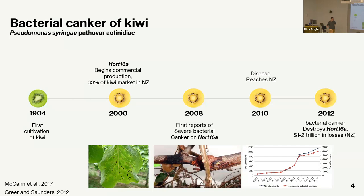Question: why New Zealand? Were other countries also growing this at the same time? Yes, they were growing it too, but it hit New Zealand particularly badly. There is research on the impacts. You do see a similar, slightly lesser extent in other countries that were growing it.